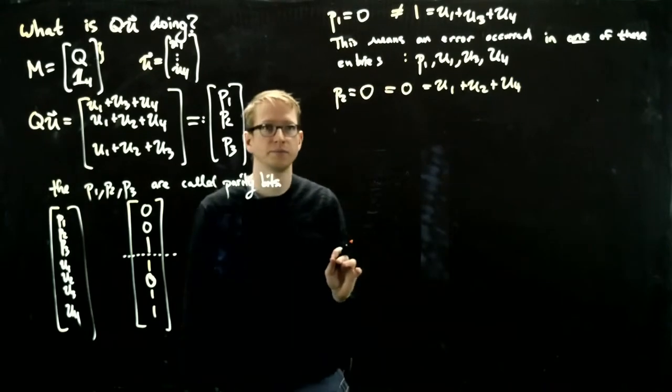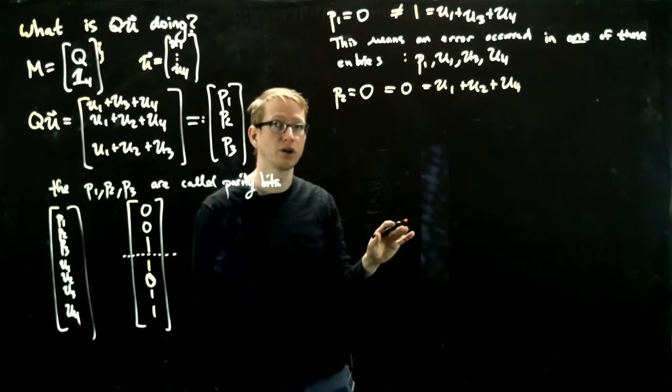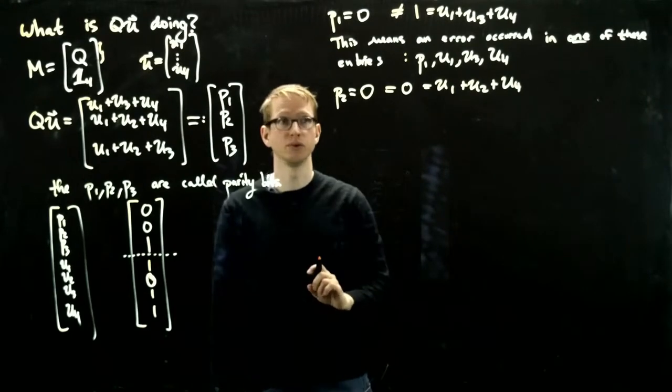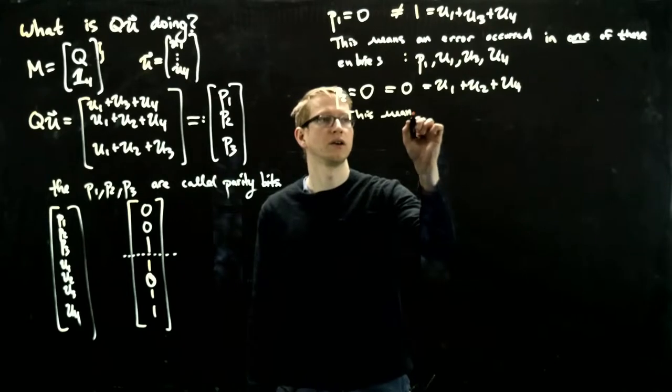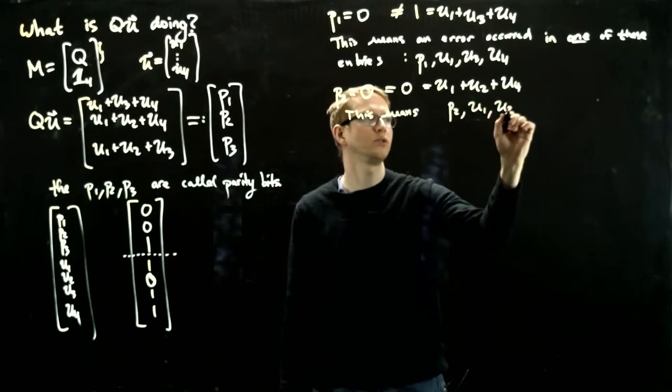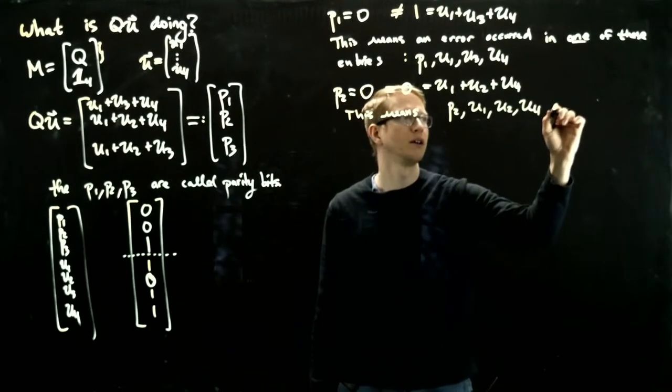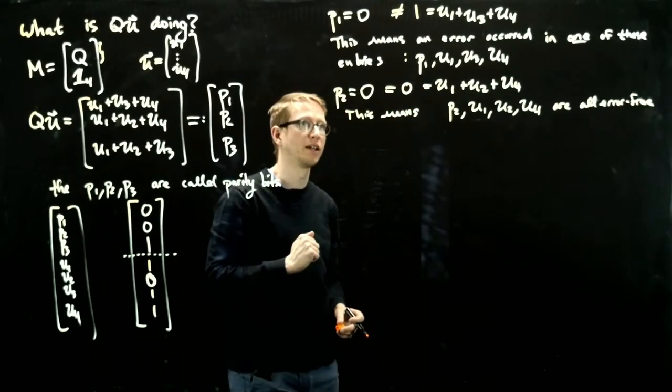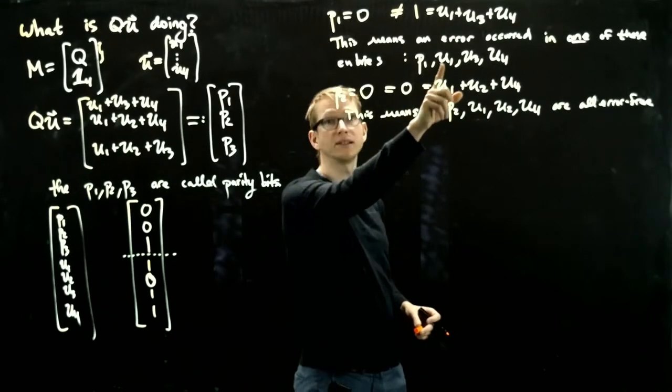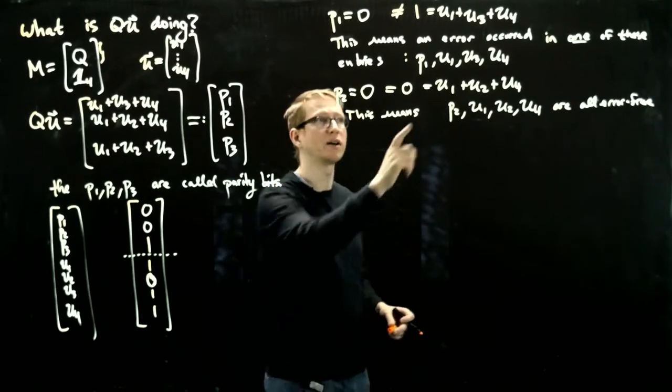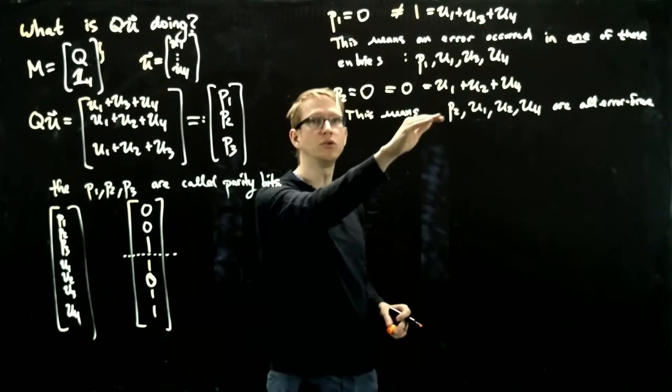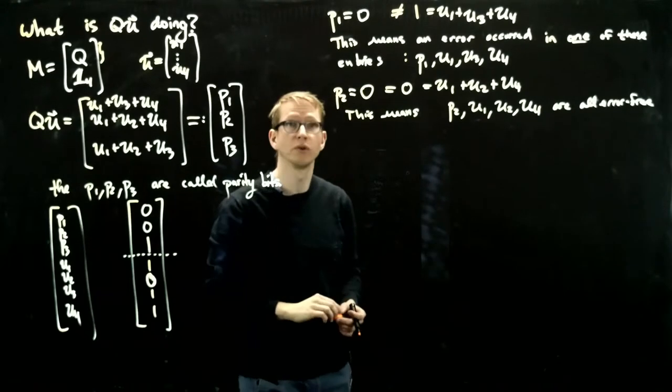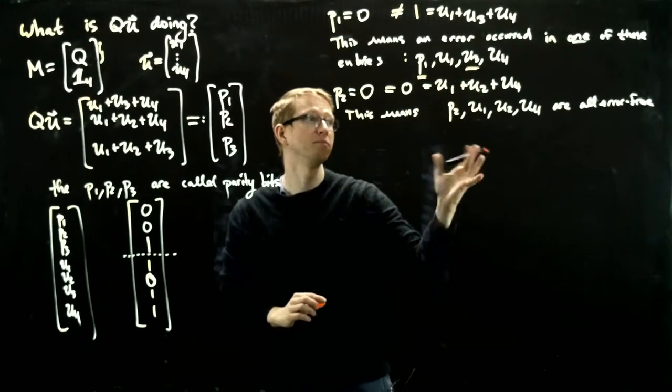What does this tell us? This tells us that no error occurred in any of these entries, because if one error occurred, it's impossible for these two to be equal to each other. So this means p2, u1, u2, and u4 are all error free. The first one said it was possible the error occurred at u1 or u4. This new observation tells us those two possibilities aren't possible, so now the only possibilities left are p1 and maybe u3.